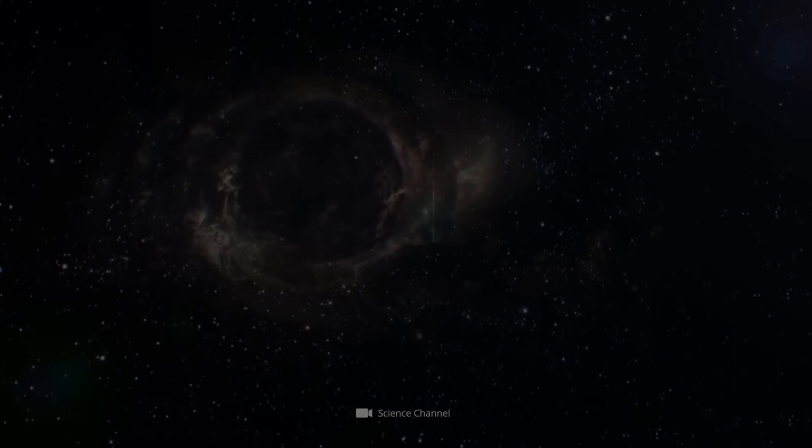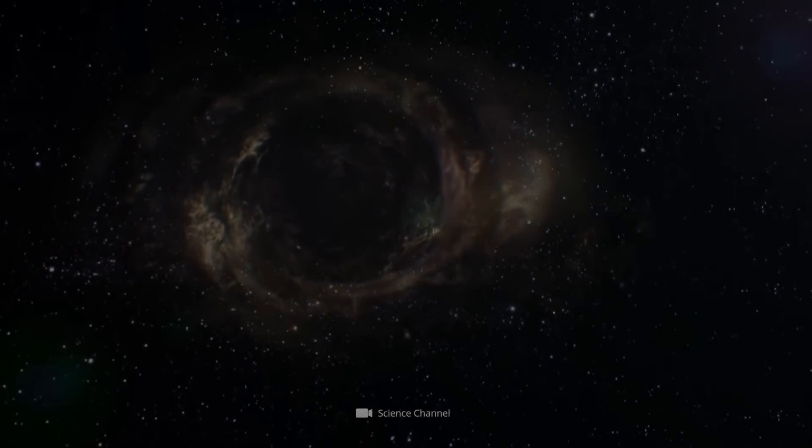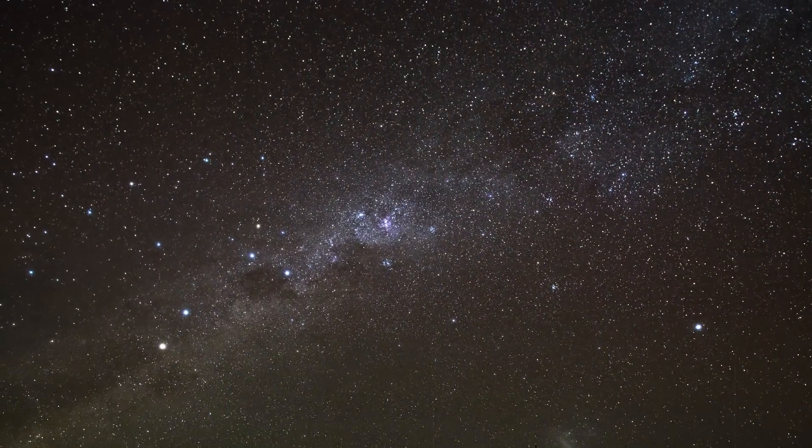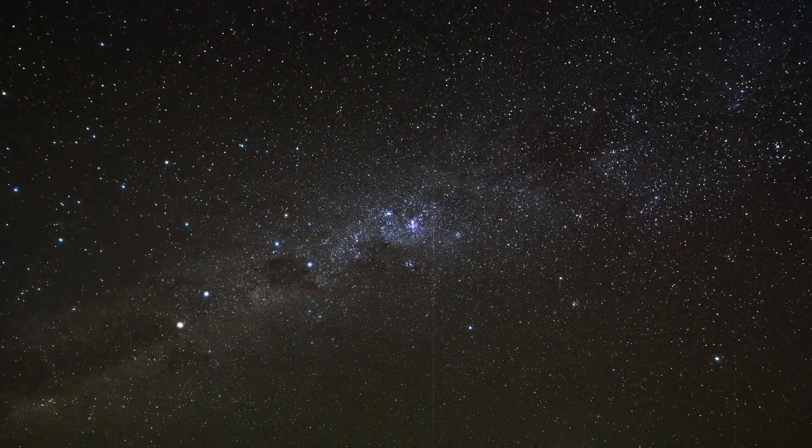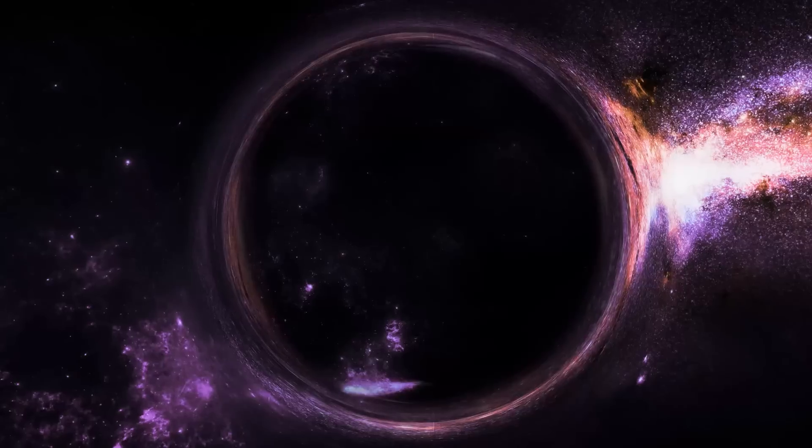It sounds crazy, but black holes are constantly flying through the solar system, and possibly even right through us, and we don't even notice them. But how is that possible?